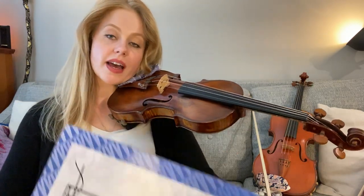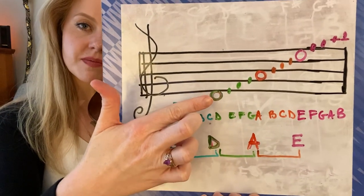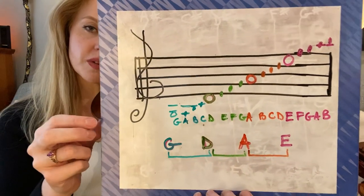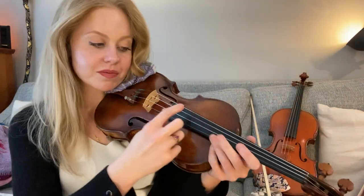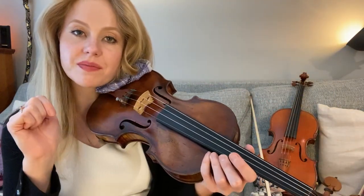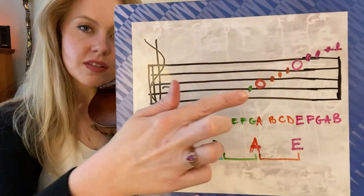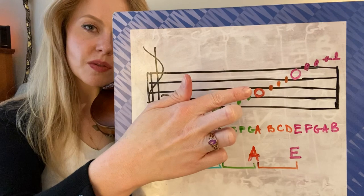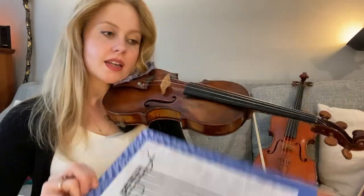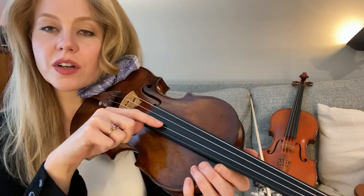The next string over is D. It's a space note — it's below the staff, just one below the staff. It's your second string. The next string we have is the A string — second space note from the bottom. It's your third string over.